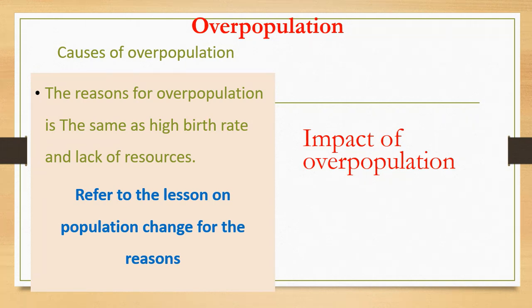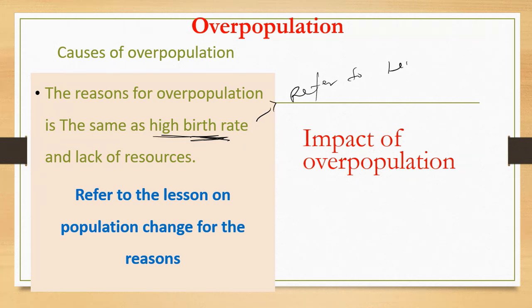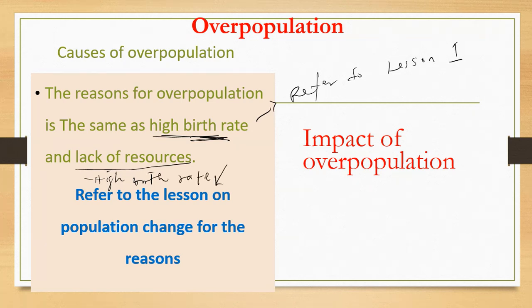The causes of over population are the same as the causes of high birth rate. The two key causes to remember are: lack of resources and high birth rate. The multiplier effect reasons for high birth rate include lack of contraceptives, agriculturally based society, religious beliefs against contraceptives, preference for a male child which increases status in the community, and early marriages.